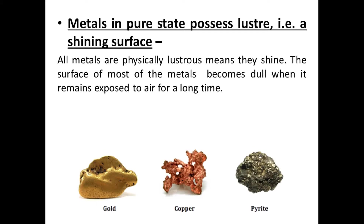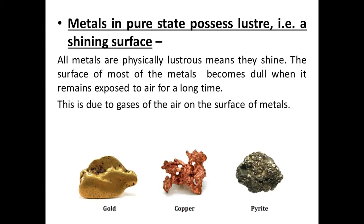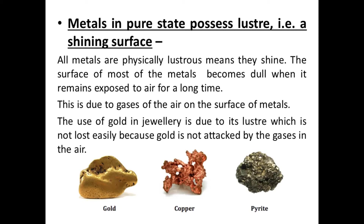First property is: metals in pure state possess luster — the metals have a shining surface. All metals are physically lustrous. However, the surface of most metals becomes dull when exposed to air for a long time, because they react with the gases in the air. But the use of gold in jewelry is due to its luster, which is not lost easily because gold is not attacked by the gases in the air. Gold never gets dull.